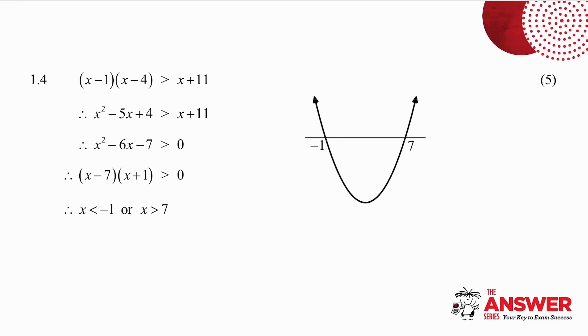Number 1.4 is a quadratic inequality. The first thing I do is multiply the brackets. I then set up my quadratic, which I factorize. I have a positive x squared, so my graph looks like this, with zeros of minus 1 and 7. I want where this is greater than zero, in other words, that part and that part. So it's when x is less than minus 1, or when x is greater than 7.